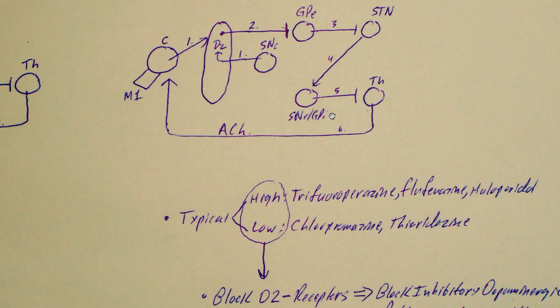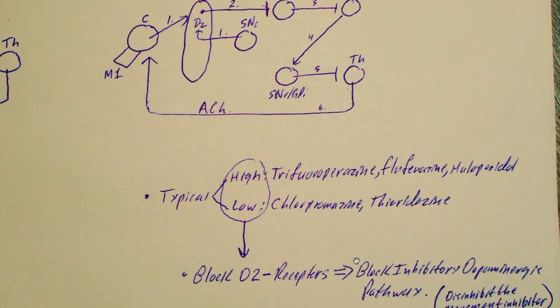And if it no longer stimulates the SNR GPI, the SNR GPI will no longer inhibit the thalamus. So the thalamus can go ahead and send out motor signals to trigger movements. And that's how these typical antipsychotics result in these movement disorders.